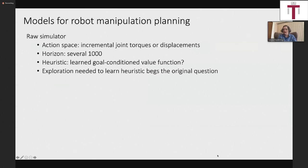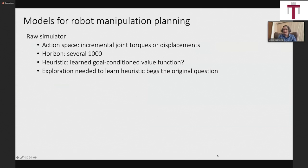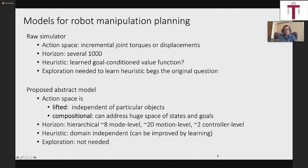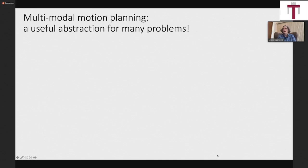You could try to do planning in a raw space, but that's not a good idea. Instead, I want to talk about abstract models. What's important is why it's useful to make abstract models and what it means to pick a good one. Presumably I pick an abstraction because it makes my computational problem easier — it's guaranteed to make my solutions worse, but hopefully not too much worse. It should be not too hard to implement or maintain, and hopefully apply to most of the problems you care about, though probably not all. A principle for building abstractions I've become very enthusiastic about is the underlying view taken in multimodal motion planning.